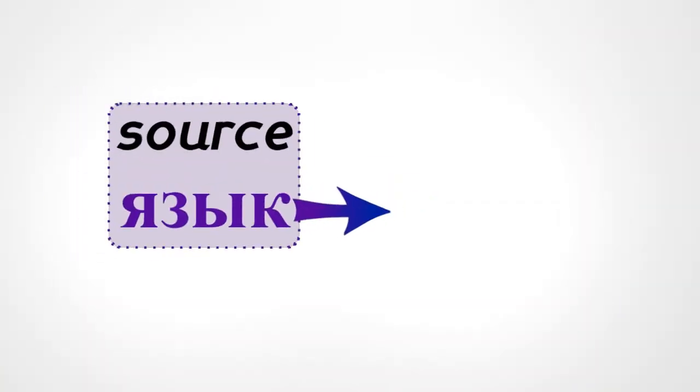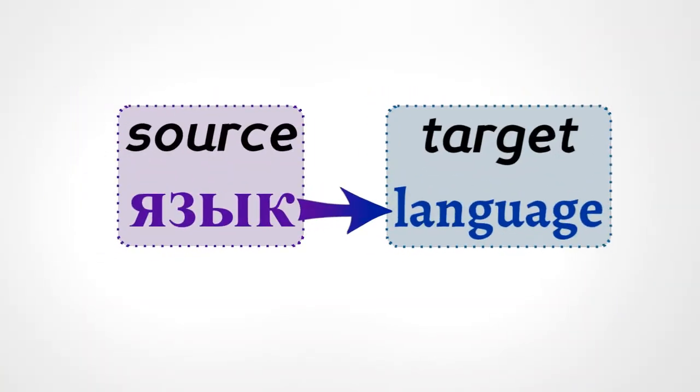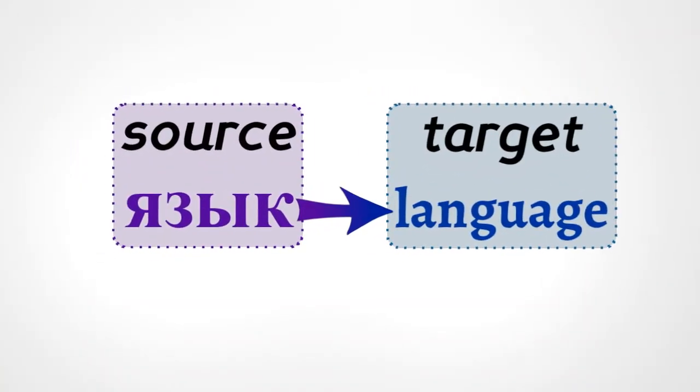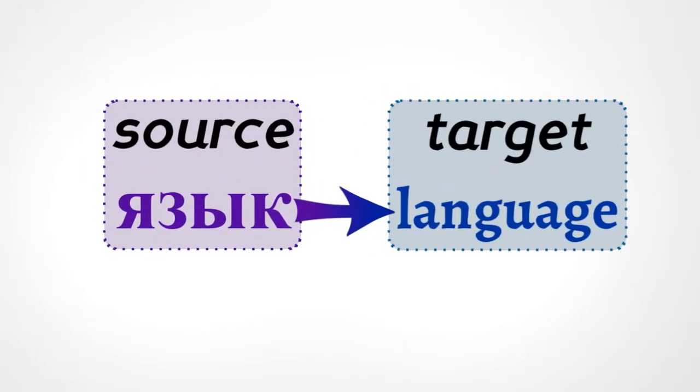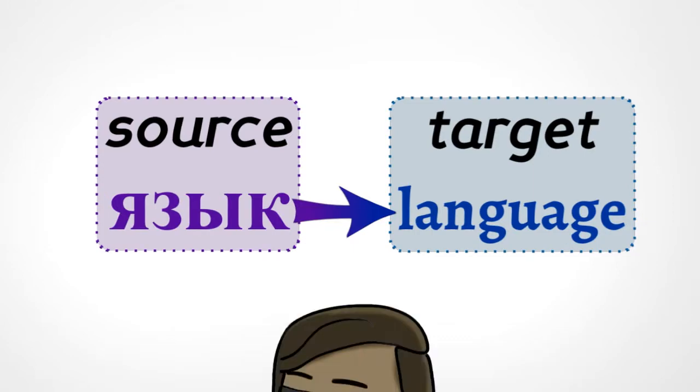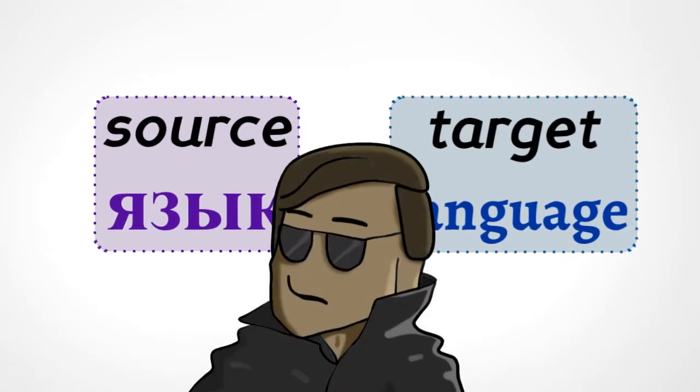The Americans were mainly using a direct translation approach: you take a source language and figure out how to rewrite its words into a target language. This was too simple for Russia — translating between two languages, why not three at once?